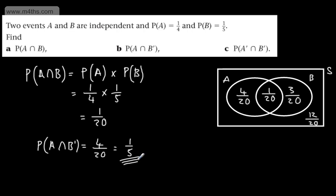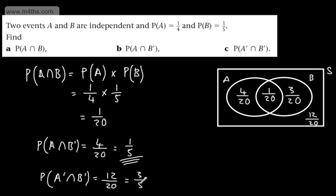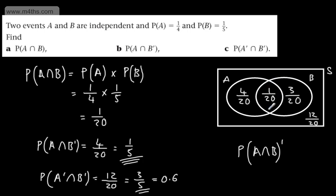The probability of not-A and not-B is the outside region: twelve-twentieths, which simplifies to three-fifths or 0.6. Note the difference between not-A intersection not-B (the outside region, 12/20) and the complement of A intersection B (which would be 19/20 or 0.95) — these are different things, so be aware of that distinction.